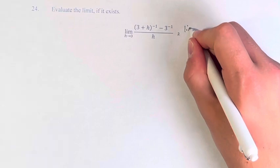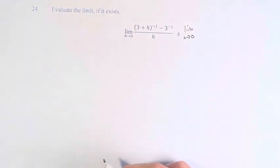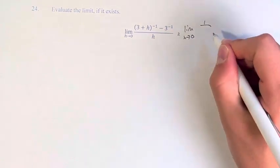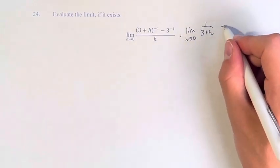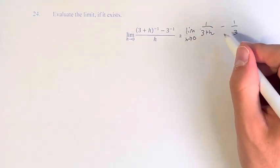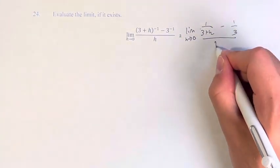So in order to solve this limit we have to first understand what it means to raise something to the negative 1 power. And the simplest way to think about this is you just take 1 over whatever is being raised to that power. So this is 1 over 3 plus h, minus 1 over 3 over h.